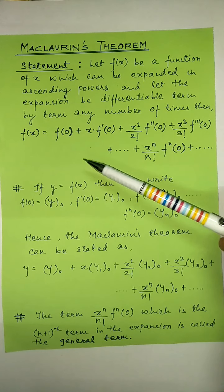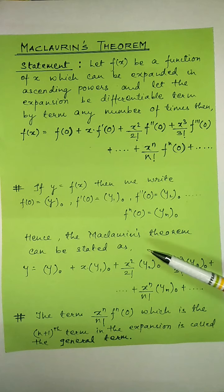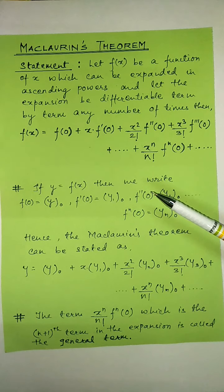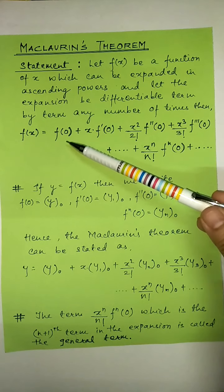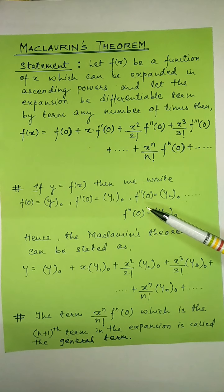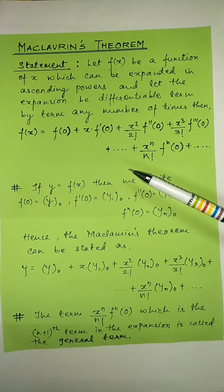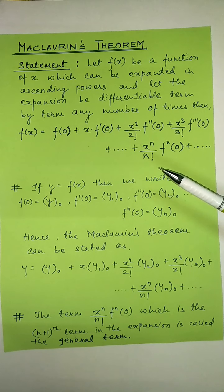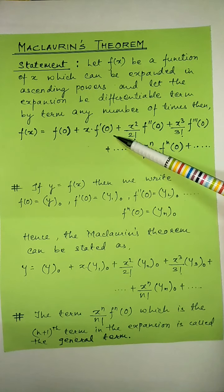Now, what are these terms in this expansion? f of 0 — we are given the function f of x. If we substitute x as 0 in the given function, what we get is f of 0. Then f dash of 0: if we differentiate f of x, what we get is f dash of x, and if we substitute x as 0 in f dash of x, we get f dash of 0.